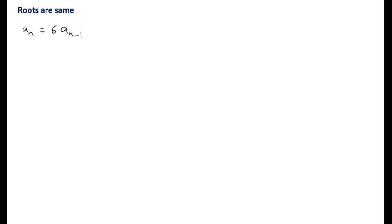The next example is solving the recurrence relation when the roots are the same. We are going to see an example: aₙ = 6aₙ₋₁ - 9aₙ₋₂, where a₀ = 1 and a₁ = 6. Let aₙ = rⁿ be the solution for the given recurrence relation.